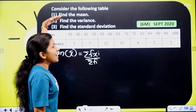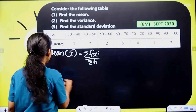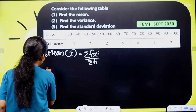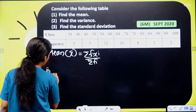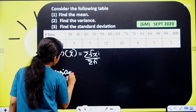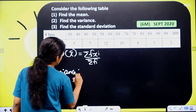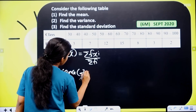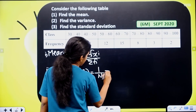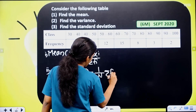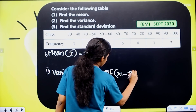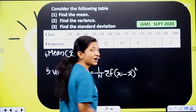We have to study the variance equation. Second one: variance. Most important formula. Variance sigma square — we have to denote the mean. Sigma square equal to 1 by n, sigma fi into (xi minus x̄) the whole square.